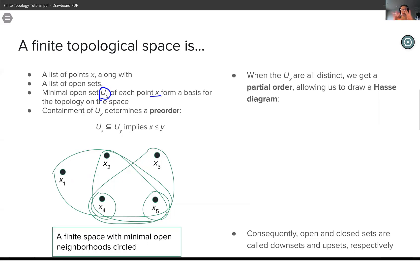So just like the real numbers have a total order, topological spaces have a pre-order that's determined by the containment of these minimal open neighborhoods ux. And so we'll say that two points are comparable x less than or equal to y whenever the minimal open neighborhood of x is a subset of the minimal open neighborhood of y.